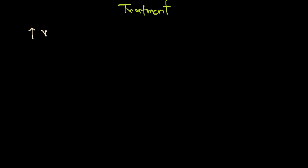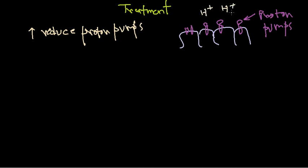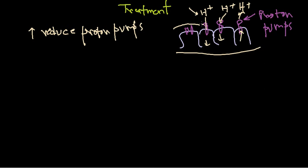One approach is to reduce the proton pumps present in the cells of the gastrointestinal lining. If I draw it — these are the gastrointestinal lining cells, and they have proton pumps. Through those proton pumps, protons can enter or exit. Usually protons exit outside into the stomach region, contributing to the acidic environment.